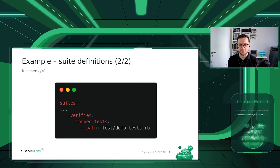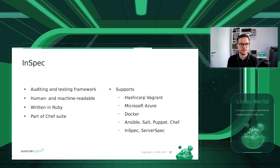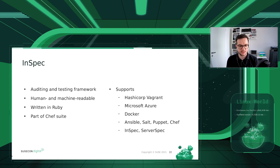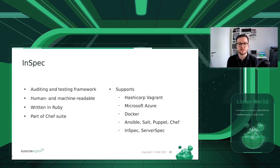InSpec is used here for unit tests. It's a framework for testing and security auditing, also part of the Chef suite and written in Ruby. The benefit of using InSpec is that the code is both human and machine readable — easy to understand even if you're not a programmer, which is very important when working in a large company where security officers who aren't developers need to understand what you're doing. It supports HashiCorp Vagrant, Microsoft Azure, AWS, GCE, Docker, and configuration management software such as Ansible and SaltStack.